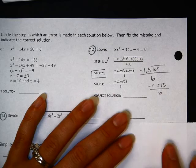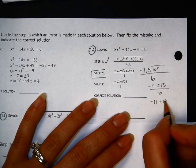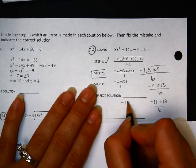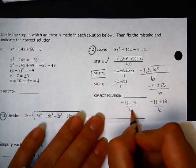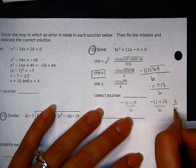And so now we need to actually just finish solving this. So we have negative 11 plus 13 over 6, and negative 11 minus 13 over 6, which gives us 2 over 6, which is 1 third.